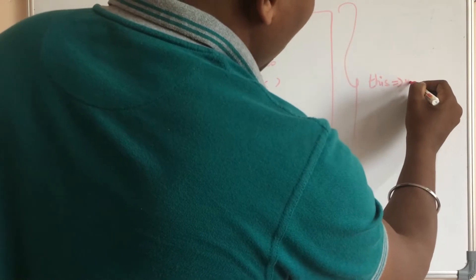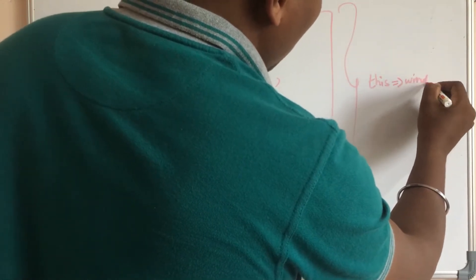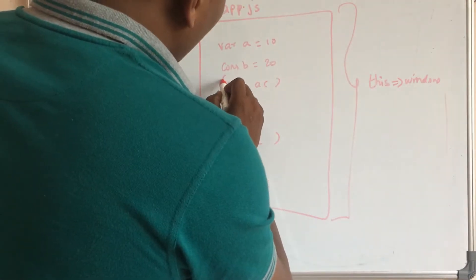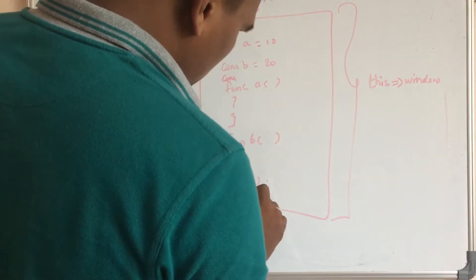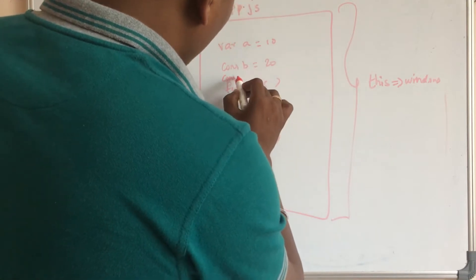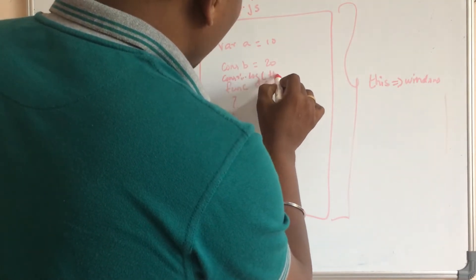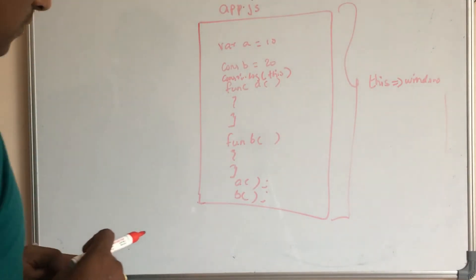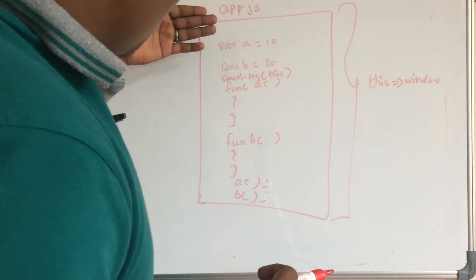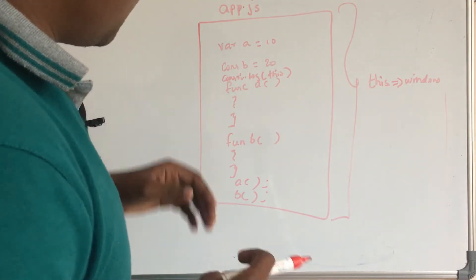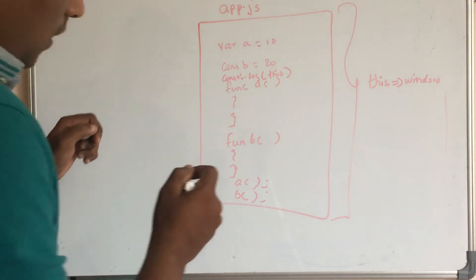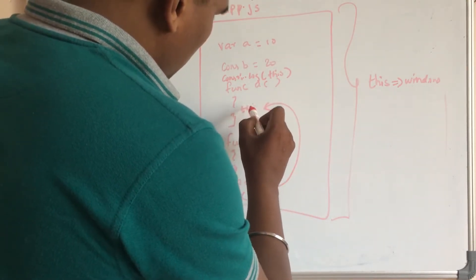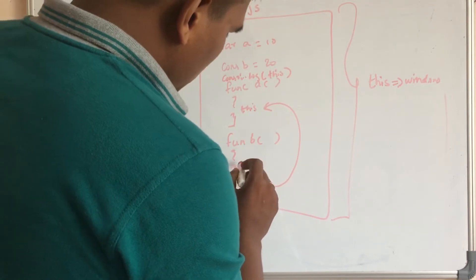If you refer to the 'this' keyword from the global object, it refers to the window object. If you are aware of the window object, and you refer to 'this' outside of any function, then console.log of 'this' will give you the window object, because 'this' at the top level refers to that global scope.